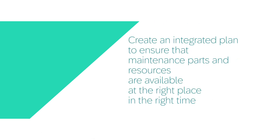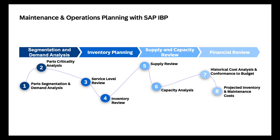To facilitate this integrated approach to maintenance planning, a new maintenance and operations planning process has been introduced. It comprises four distinct planning steps: segmentation and demand, inventory, supply, and financial planning. Each step is represented by a distinct page in analytic stories and a corresponding workbook in planner workspace.